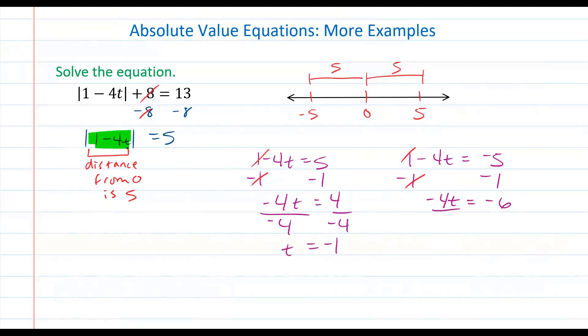So first we get t is equal to negative 1. Then we also divide by negative 4 to the second equation, and so t is equal to positive 6 fourths, because a negative over negative is a positive. We do want to reduce that fraction to become 3 halves. So our final answers are t is equal to negative 1 and also 3 halves. All right guys, good luck.